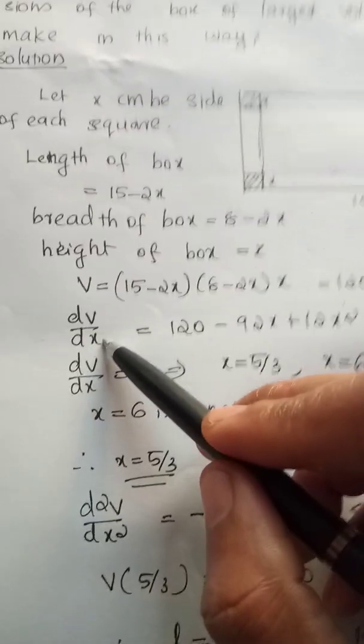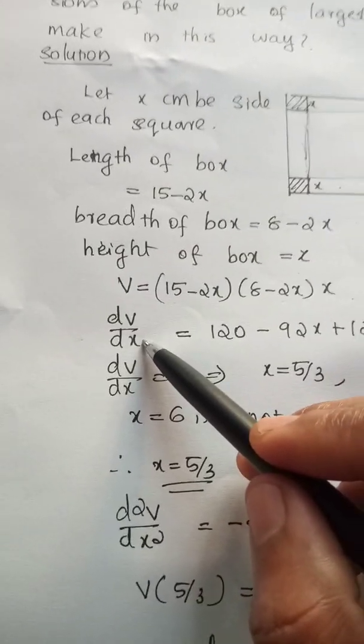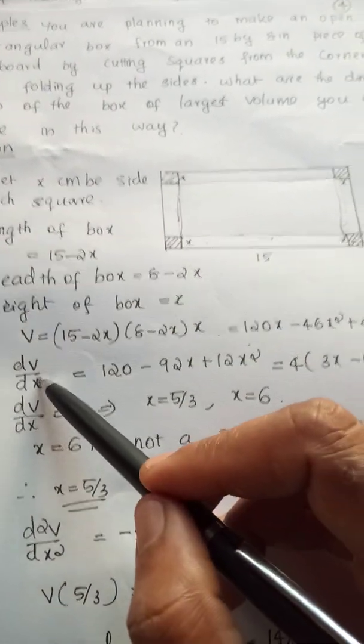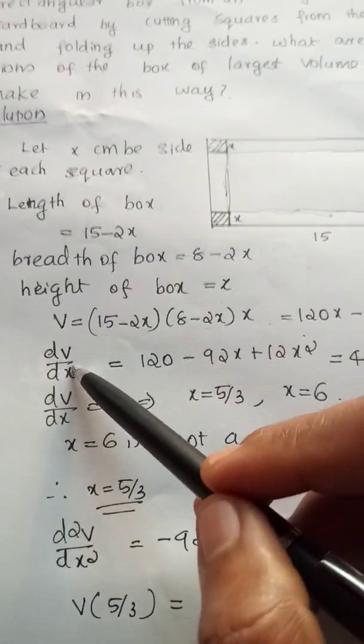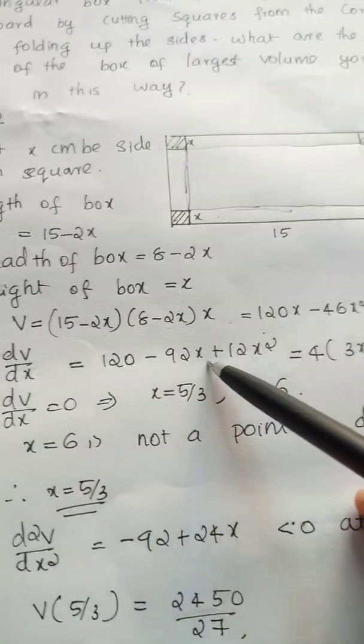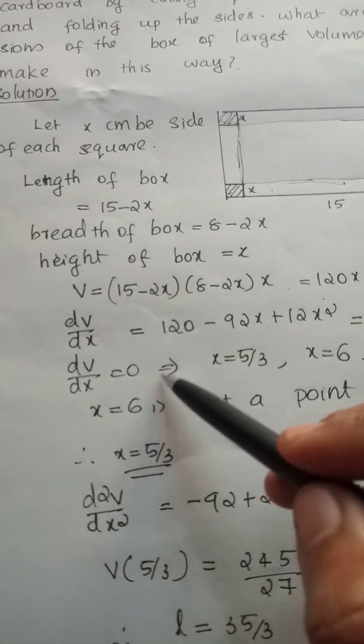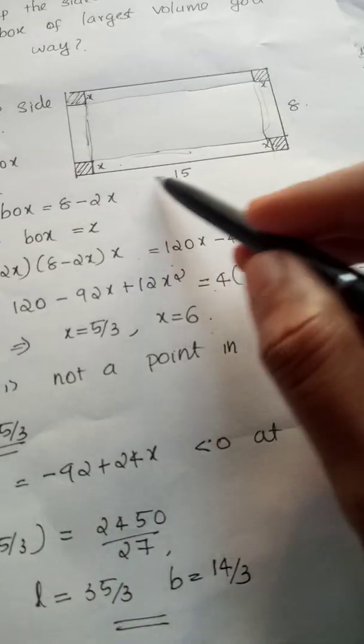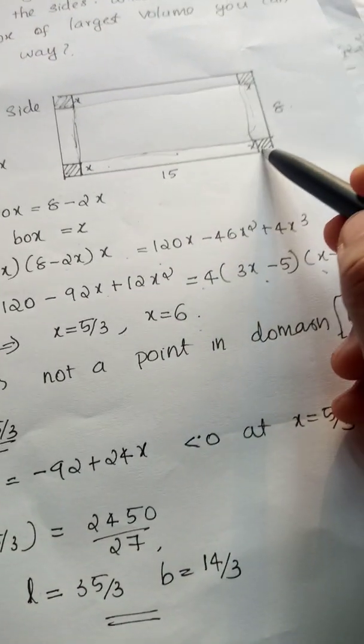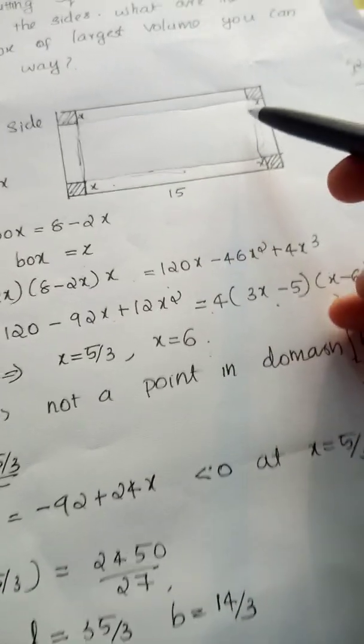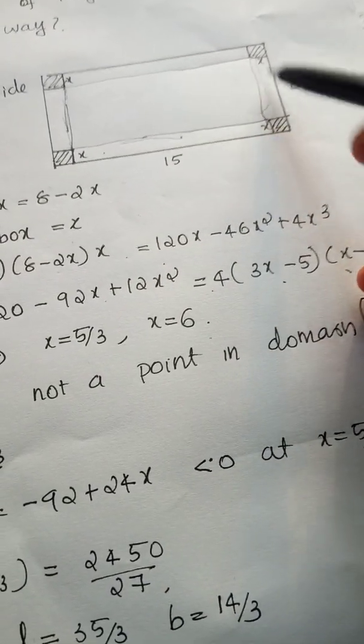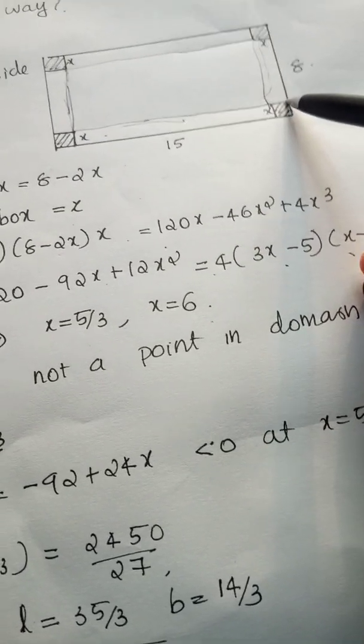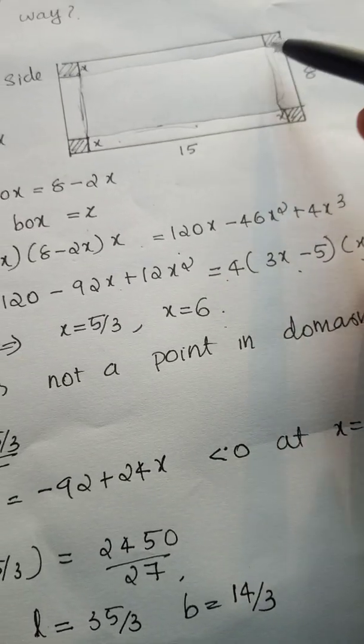To find the maximum or minimum, we set dV/dx = 0 and solve for x.